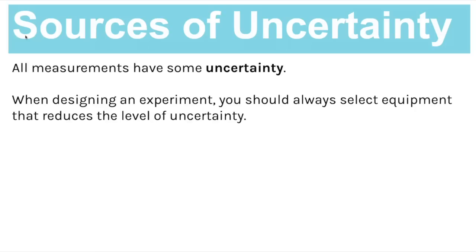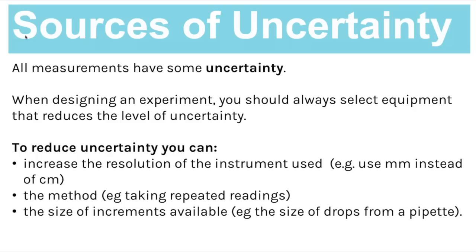All measurements have some uncertainty, which means what you have measured might not be completely accurate. When designing an experiment, you should always select equipment and procedures that reduce the amount of uncertainty in your measurements. One way to reduce uncertainty is to increase the resolution of the instrument used. If you are using a measuring cylinder or a ruler, make sure you're using one that measures to at least millimetres and not just centimetres. The uncertainty is half of the smallest increment at each end, so going to millimetres instead of centimetres gives an uncertainty of 0.5mm instead of 0.5cm.